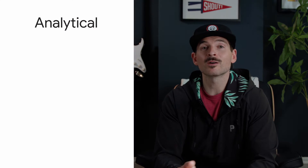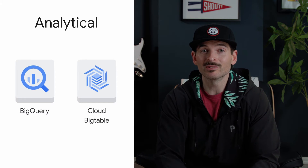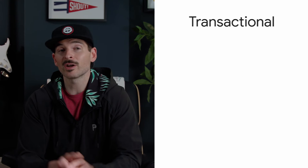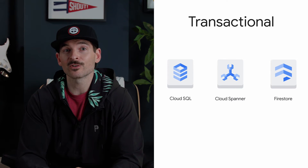The first step is categorizing them into transactional versus analytical workloads. When it comes to analytics, think big — specifically, Big Query and Bigtable. These are used for things like analyzing sales history to find trends. The products used for transactional workloads, for example point-of-sale transactions, are the rest: Cloud SQL, Cloud Spanner, and Firestore.